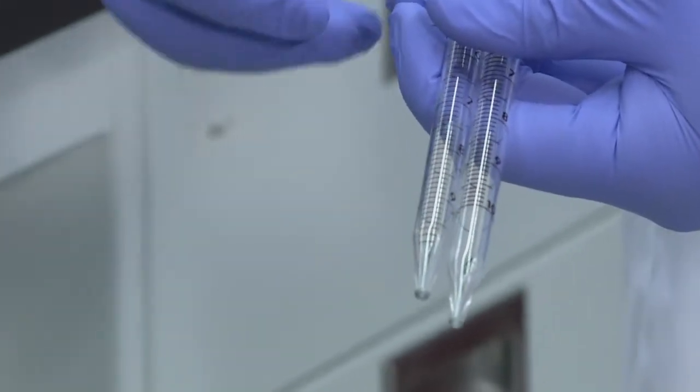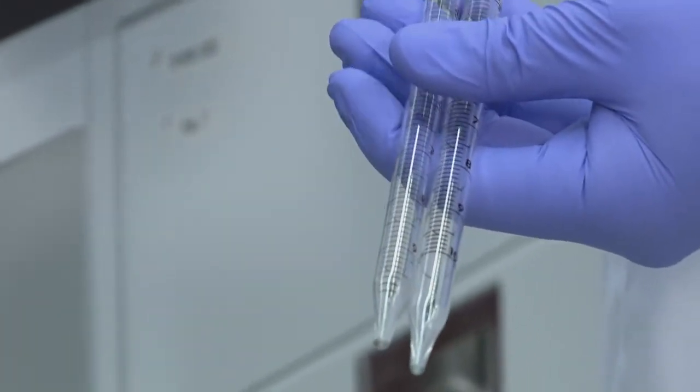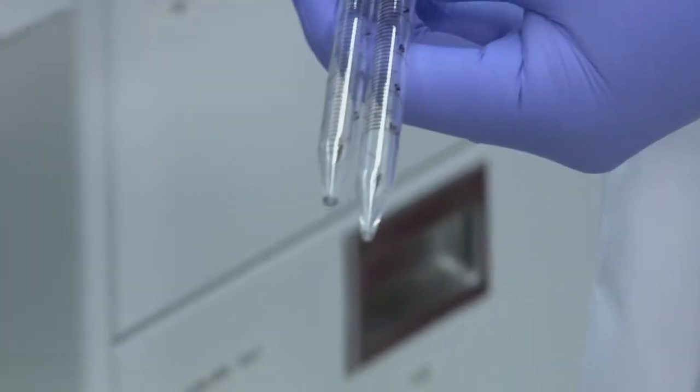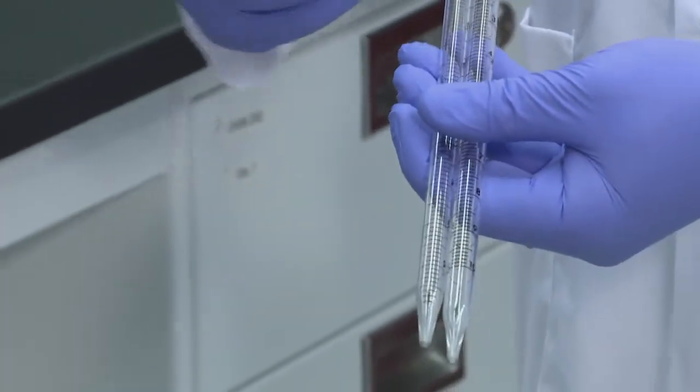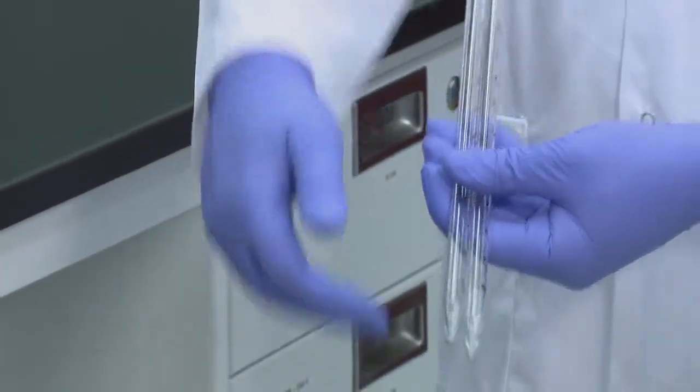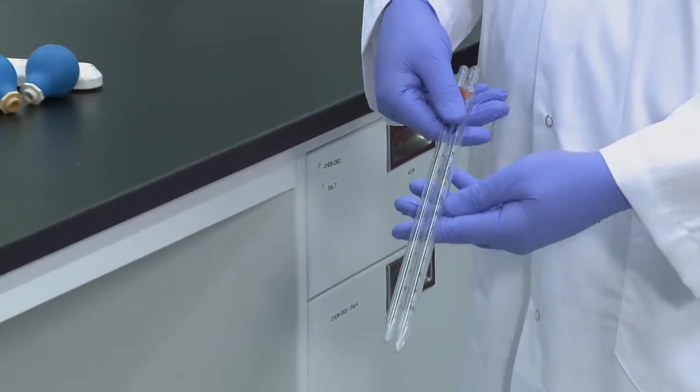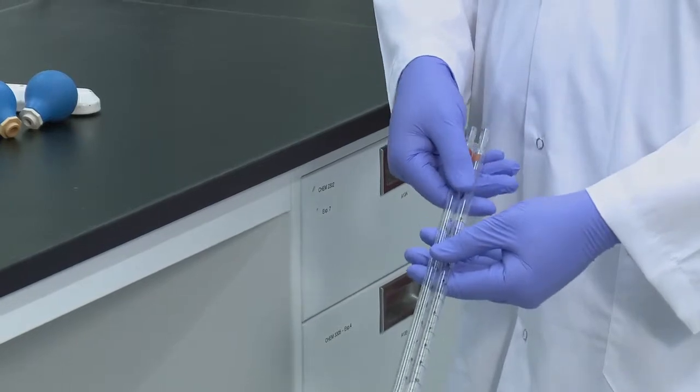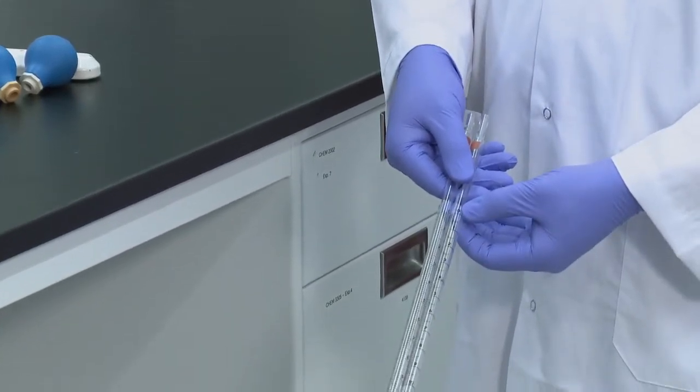On the right we have the serological or blowout pipette where the gradations go all the way to the bottom. This pipette is intended to be emptied from whatever line you're at to the very bottom. On the left we have a Mohr pipette where the bottom part is uncalibrated. So to deliver 10 mL in this pipette you would go from the zero line and stop at the 10.